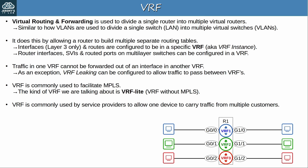VRF is commonly used by service providers to allow one device to carry traffic from multiple customers. Each customer's traffic is isolated from the others, because each customer connects to their own virtual router within the service provider's physical router. In the diagram below, the blue, green, and red devices represent three different customers. All customers connect to the same service provider router R1, but each connects to a different virtual router — a different VRF instance.